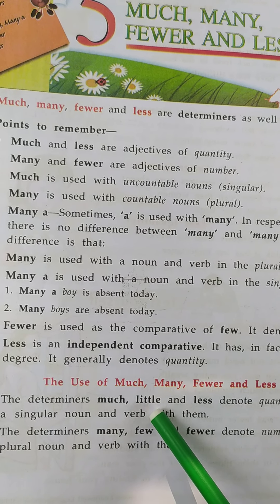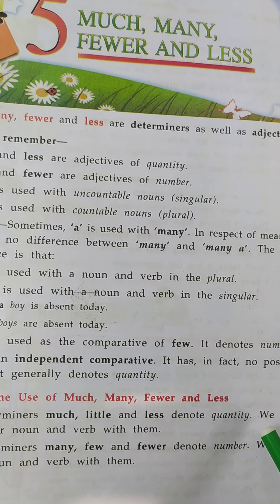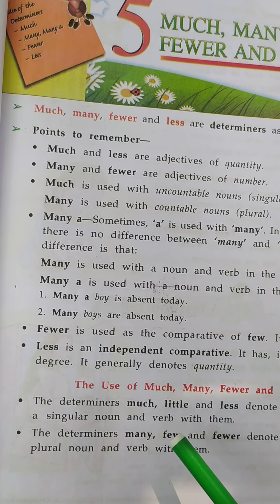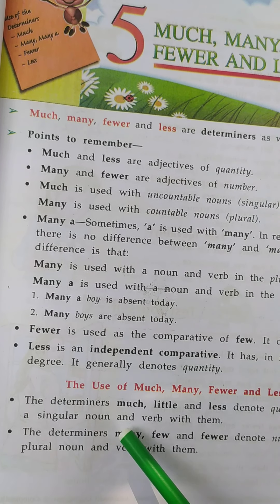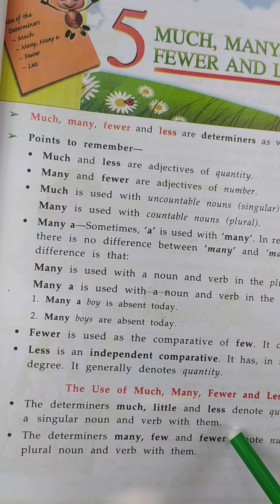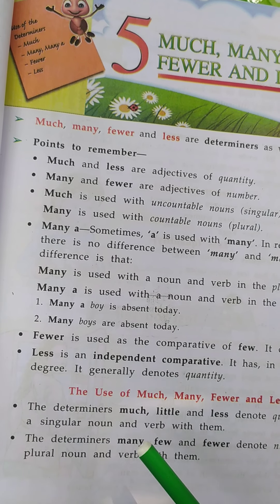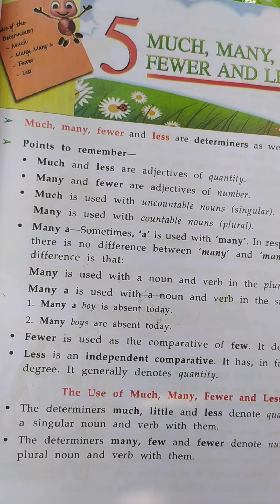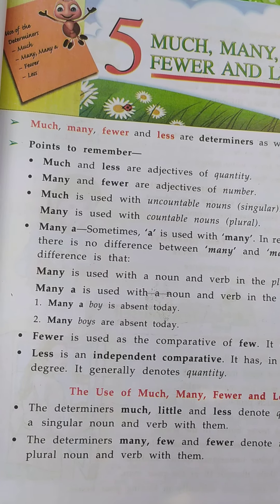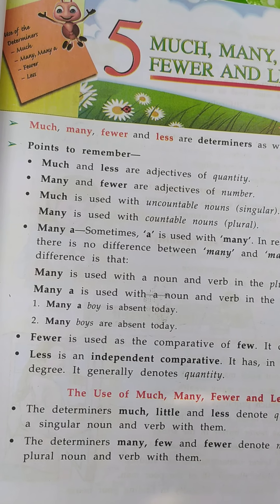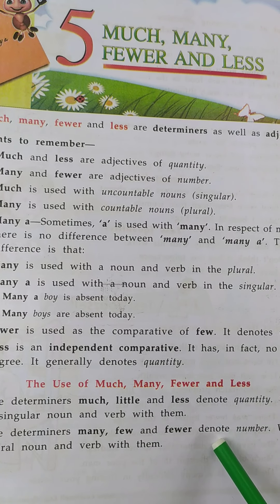We use a singular noun and singular verb with them. The determiners much, little and less take a singular noun and singular verb. The determiners many, few and fewer denote number.